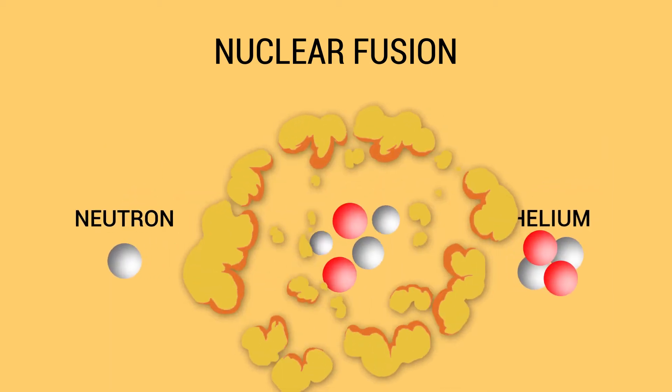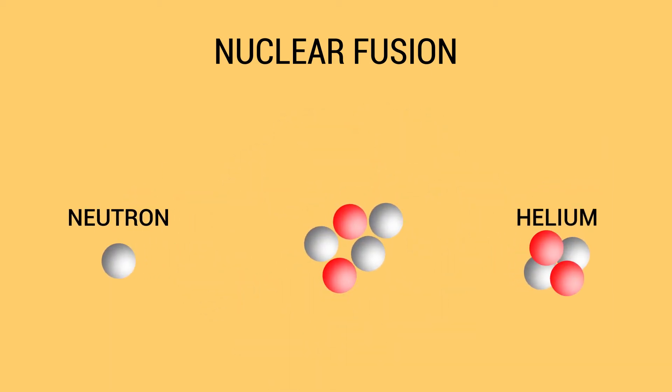Nuclear fusion occurs when atomic nuclei fuse together to form one or more different atomic nuclei. The difference in mass between the reactants and products leads to a release of energy.